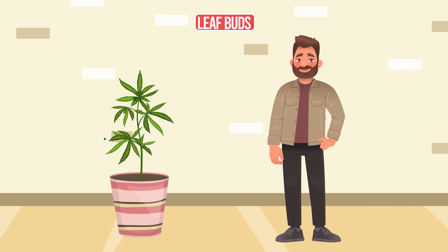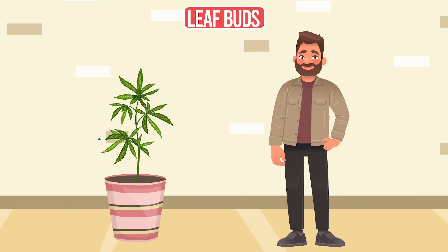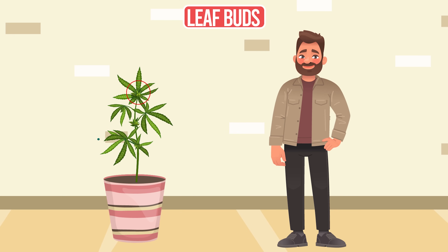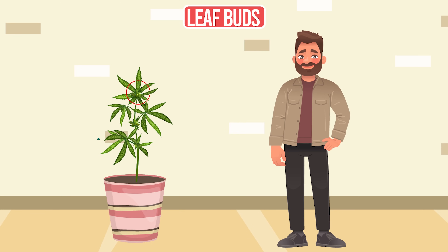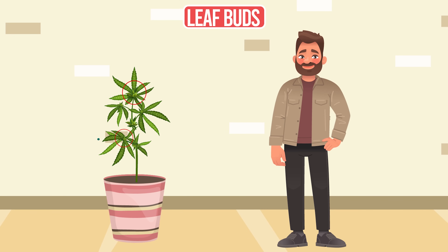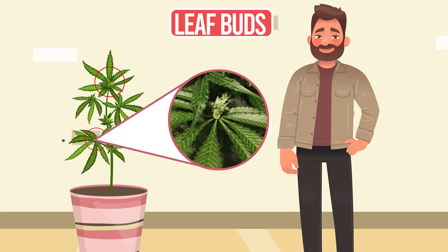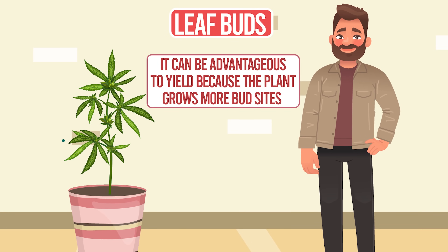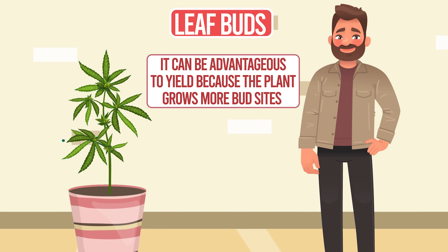Then we have leaf buds. Most flower sites on cannabis plants occur at the nodes where the stalks originate. However, leaf buds occur at the base of the leaves themselves. This is an unusual, if pretty, mutation. It can also be advantageous to yield because the plant grows more bud sites.